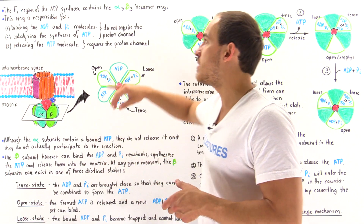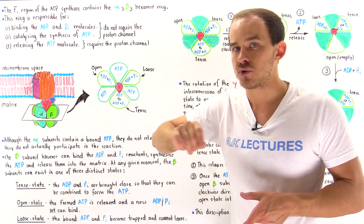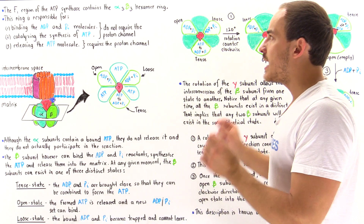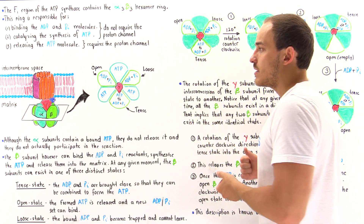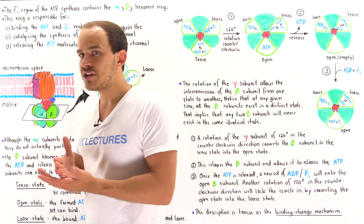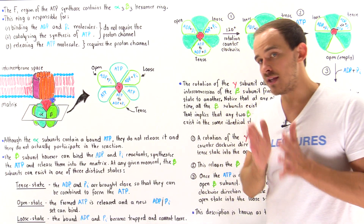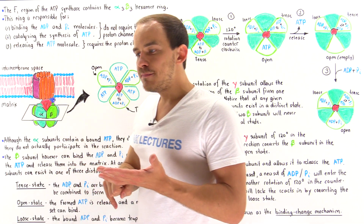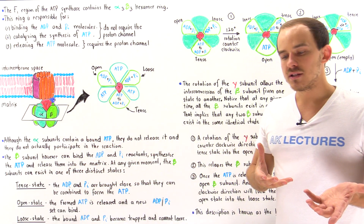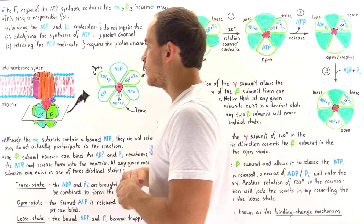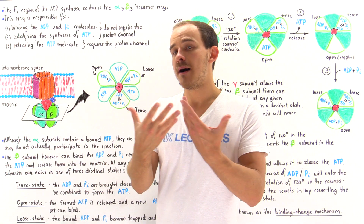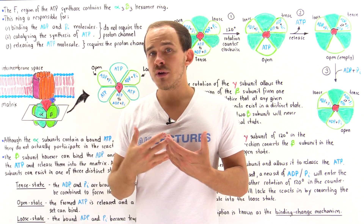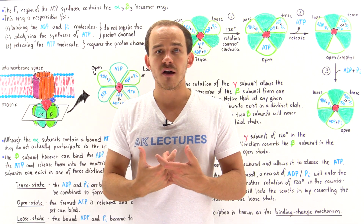The catalytic structure is known as the alpha-3 beta-3 hexamer ring. The F1 region of ATP synthase contains this hexamer ring, which catalyzes the formation of ATP molecules in three steps: step one binds the reactants — ADP and inorganic orthophosphate; step two catalyzes their combination to form ATP; and step three releases the ATP into the matrix of the mitochondria.